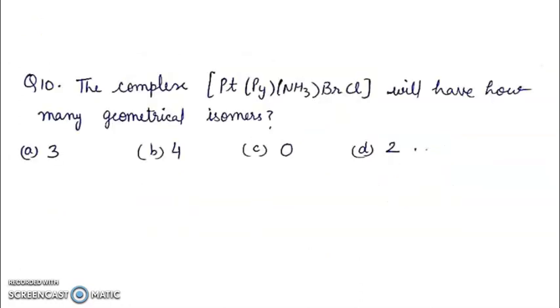Question 10. The complex Pt(py)(NH3)(Br)(Cl), this compound will have how many geometrical isomers? A: 3, B: 4, C: 0, D: 2.